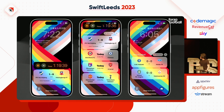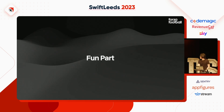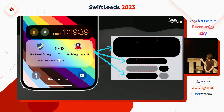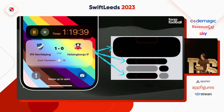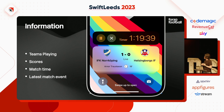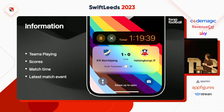And here comes the fun part — the dynamic island. We have the lock screen design, and we want to show the same information in the expanded, minimized, and compact states. The screen asset is much, much smaller. To recap what we have: teams playing (name and badges), scores if the match is live, match time (kickoff time before start, match minute during play, 'Full Time' after), and the latest match event.